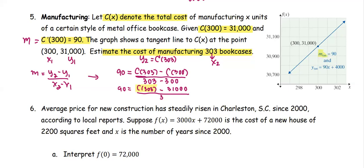Multiply both sides by 3 to get 270 = C(303) - 31,000. Next we're going to solve for the cost at 303 by adding both sides with 31,000. So the left-hand side becomes 31,270 = C(303). This is what we are looking for.